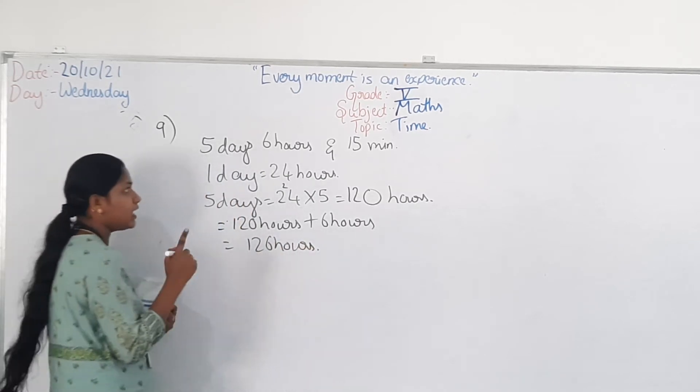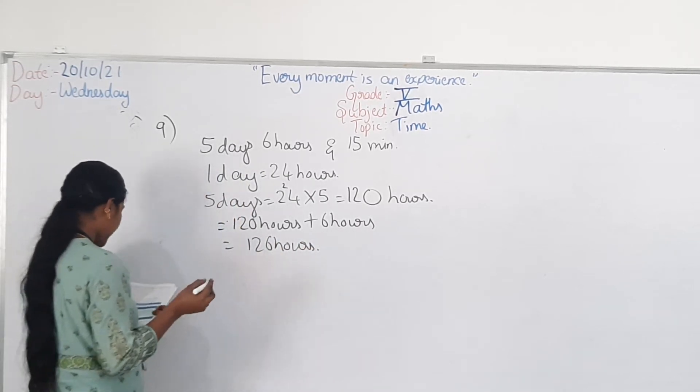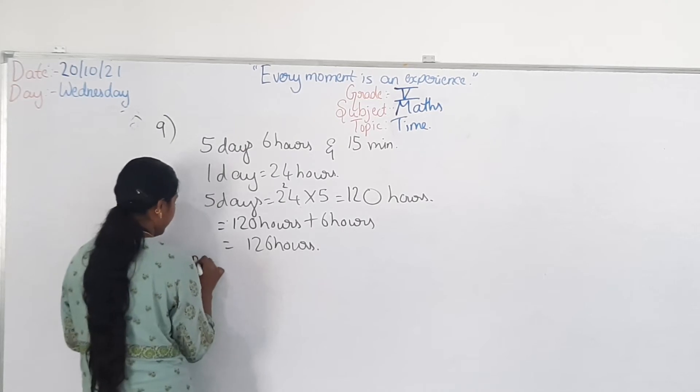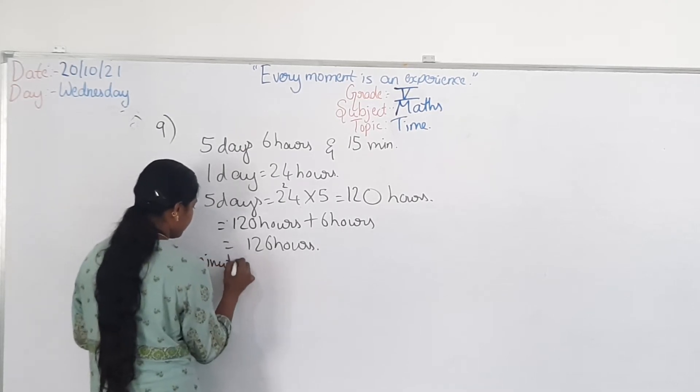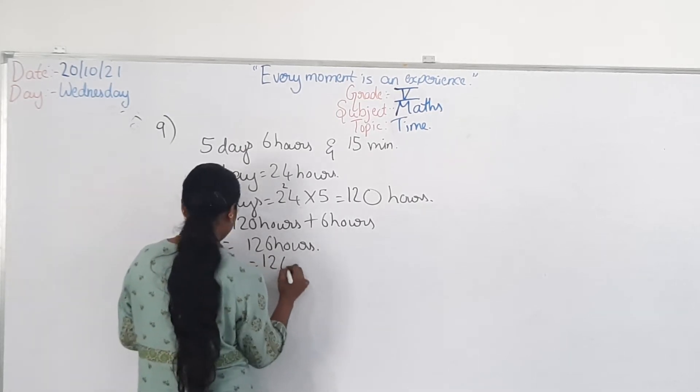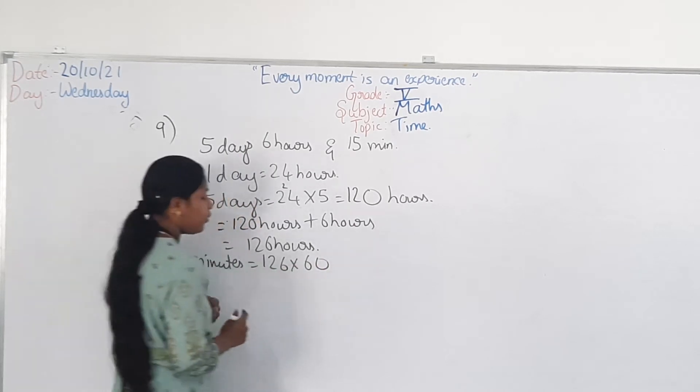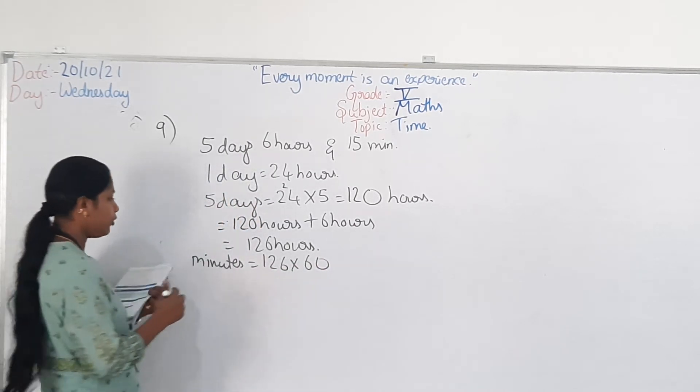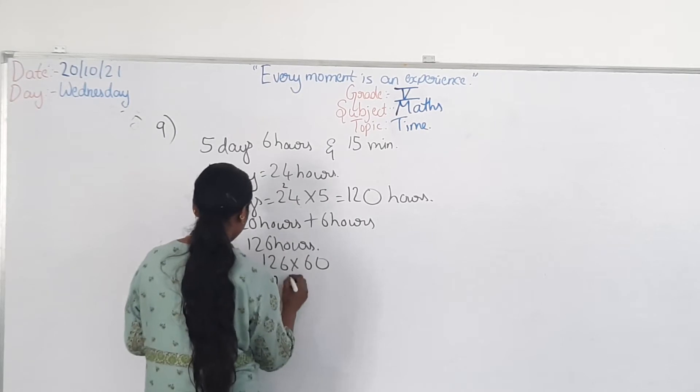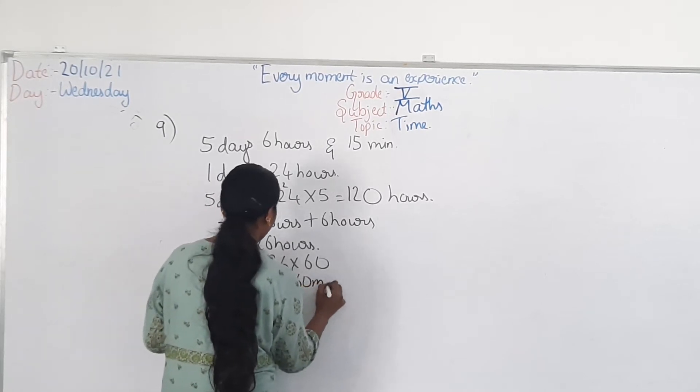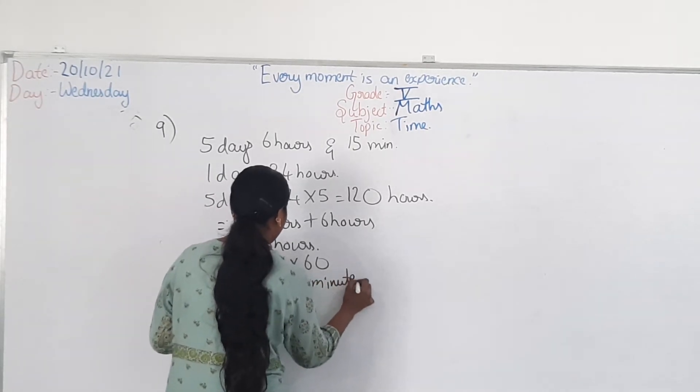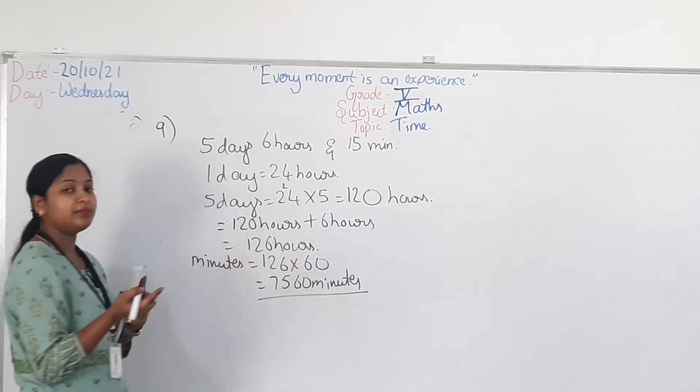Now you have to convert this hours into minutes first. To convert it into minutes, 126 into 60. So, 1 hour equals 60 minutes. Then what do you get the answer? Then you get 7560 minutes. Now, you have to convert this total minutes into seconds.